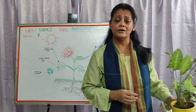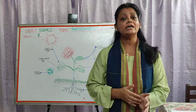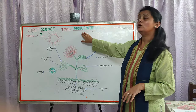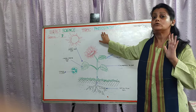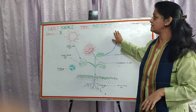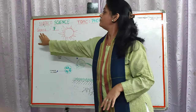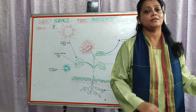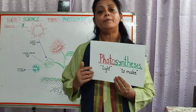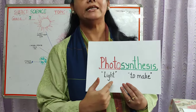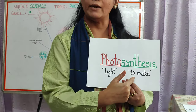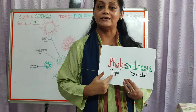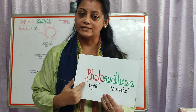How do plants manufacture their own food? Today we will be learning about the process of how plants make their food, and the process is called photosynthesis. So today's topic of discussion is photosynthesis, for science grade 7 students. Now what does the word photosynthesis mean? If we split the word into two — photo means light and synthesis means to make. So the making of food in the presence of light is the meaning of the word photosynthesis.